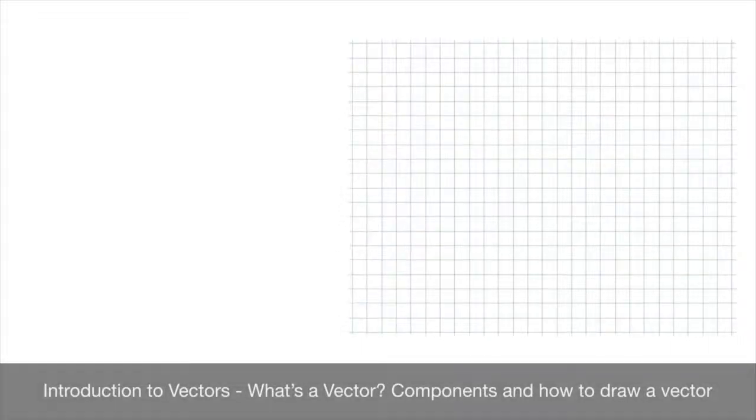We now learn about vectors. A vector is a quantity which is defined both by its size, also known as magnitude, as well as its direction.